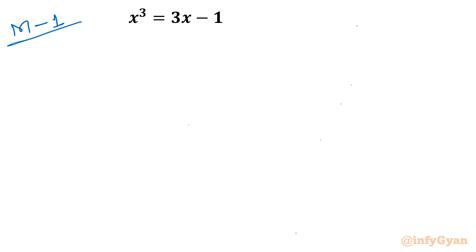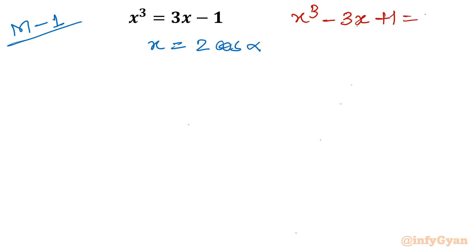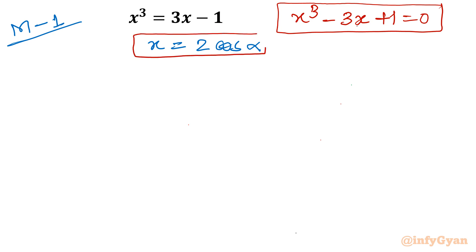For method 1, I will use the substitution x = 2cos(α). This is my trigonometric substitution. But before that, let me write our equation on the left-hand side: x³ - 3x + 1 = 0. This is our equation. Now let's substitute this value into the equation.